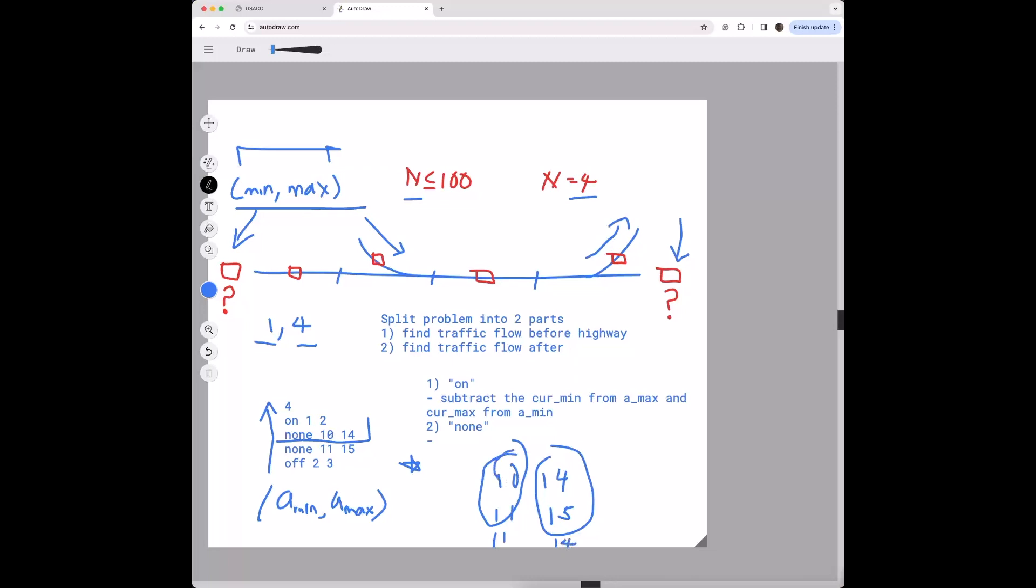Because if we had 10 that wouldn't fit the requirements for 11 and 15, and if we had 15 that wouldn't fit the requirements for 10 and 14. So what that basically means is if it's none, take the min of maxes and max of mins.